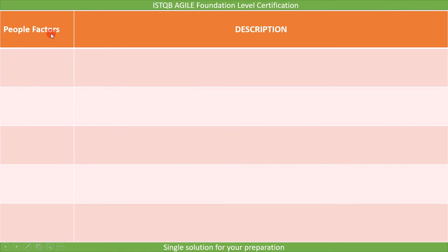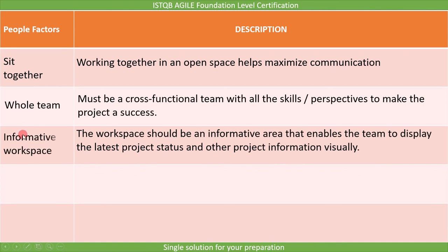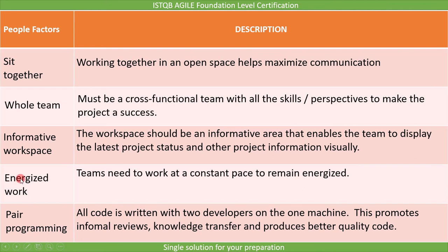The second group is people factors, which includes five practices: sit together, whole team, informative workspace, energized work, and pair programming. Sit together means working together in an open space to maximize communication. The whole team practice means the team must be a cross-functional team with all the skills and perspectives to make the project a success. Informative workspace means the workspace should display the latest project status and other information visually. Energized work means teams need to work at a constant pace to remain energized. Pair programming means all code is written with two developers on one machine, which promotes informal reviews, knowledge transfer, and produces better quality code.